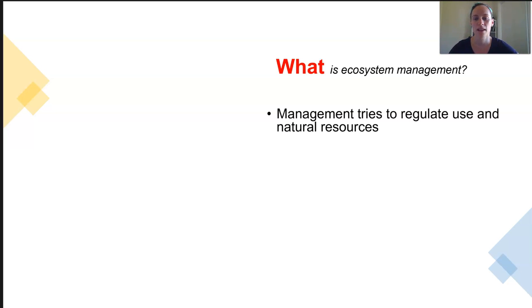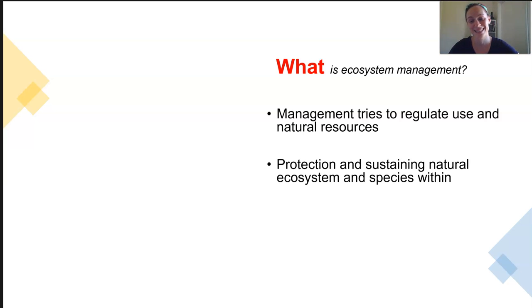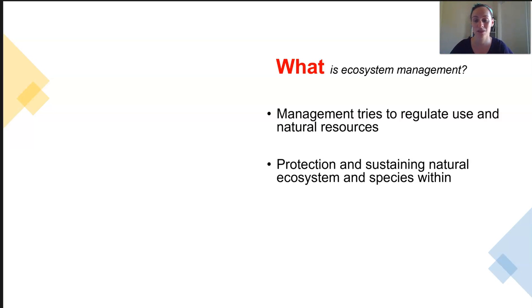Ecosystem management tries to regulate the use of an ecosystem and the natural resources within it. We want to still be able to benefit from them while simultaneously minimising the impact that we have on them, so they can still function at the level of complexity they need to and remain self-sustaining. Management strategies must be in place both as a tool for protecting species and natural ecosystems, and also whenever something new is being built near them.